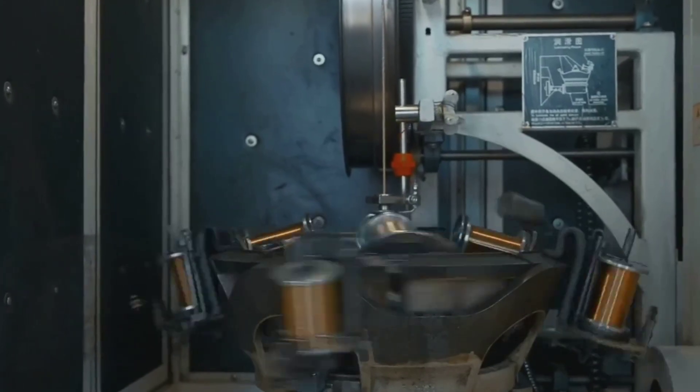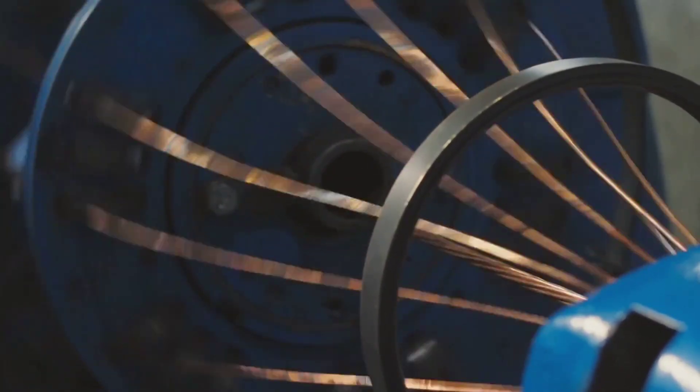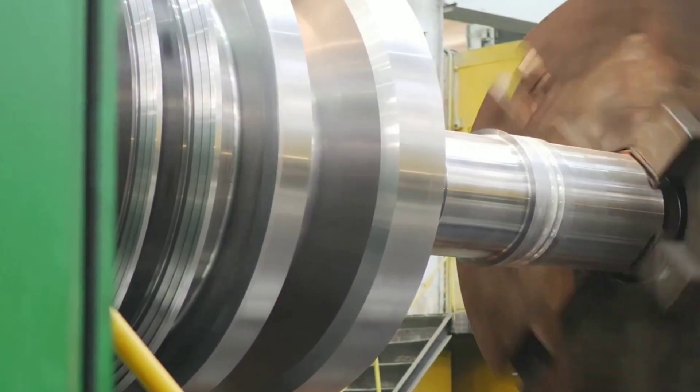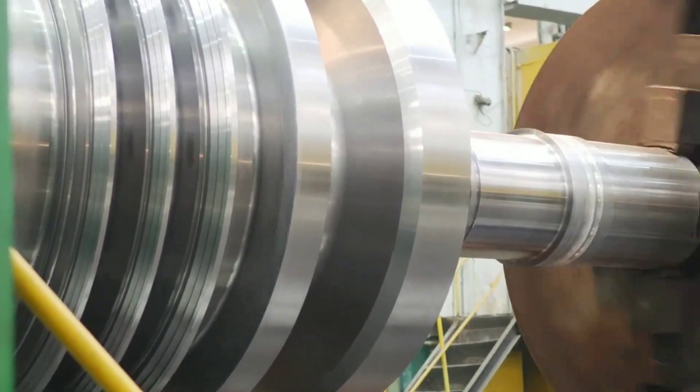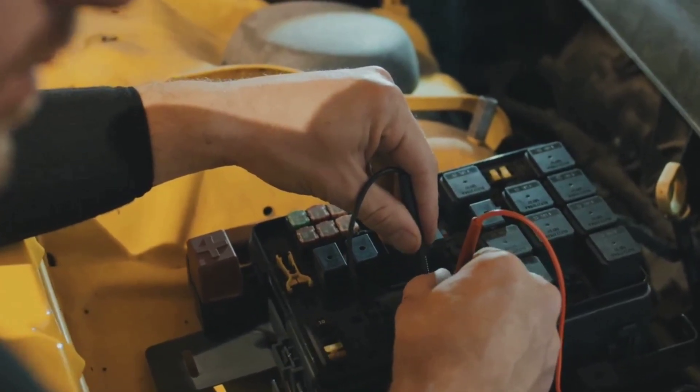The commutator is the genius switch, a split copper ring attached to the rotor's shaft. As the rotor spins, the commutator reverses the current in the coils every half turn, keeping the torque going in the same direction. Brushes, small blocks of carbon, press against the commutator, delivering electricity from the battery to the spinning coils.